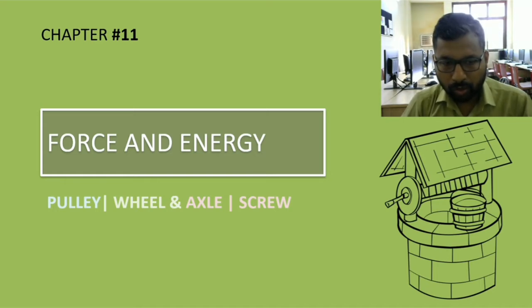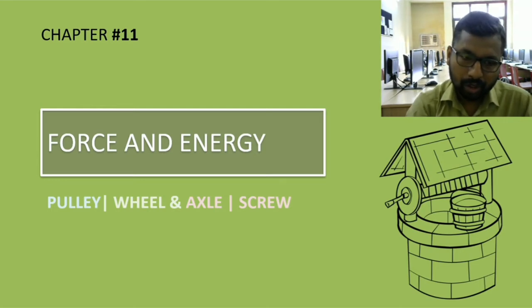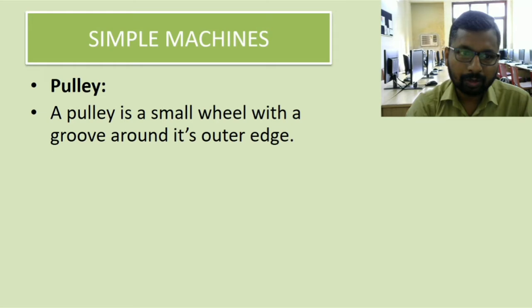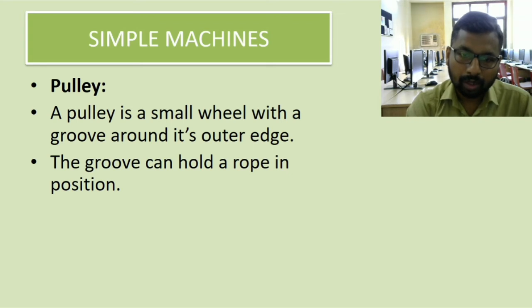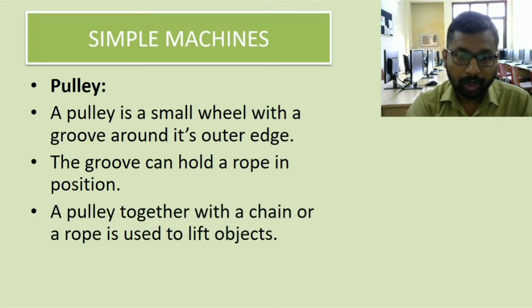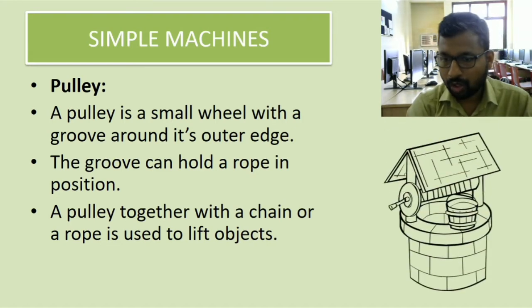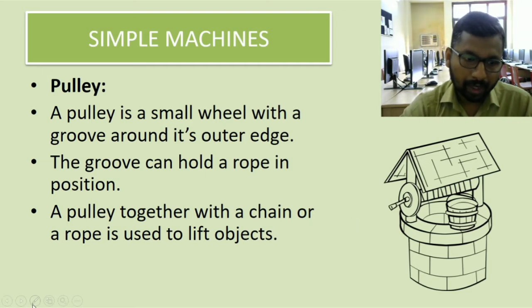So let us do it today. Let us finish the simple machines. Starting with pulley: a pulley is a small wheel with a groove around its outer edge. The groove can hold a rope in position. A pulley together with a chain or a rope is used to lift objects.